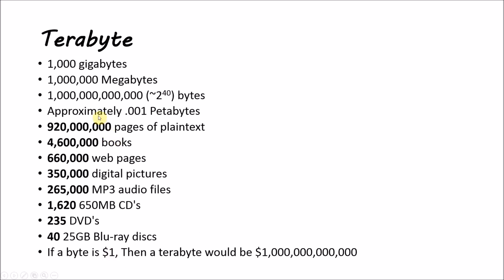Now we have the terabyte, and we're getting pretty big — we'll stop after this one. A terabyte is 1,000 gigabytes, one million megabytes, and one trillion bytes. It's approximately one one-thousandth of a petabyte. If a byte is $1, then a terabyte would be one trillion dollars.